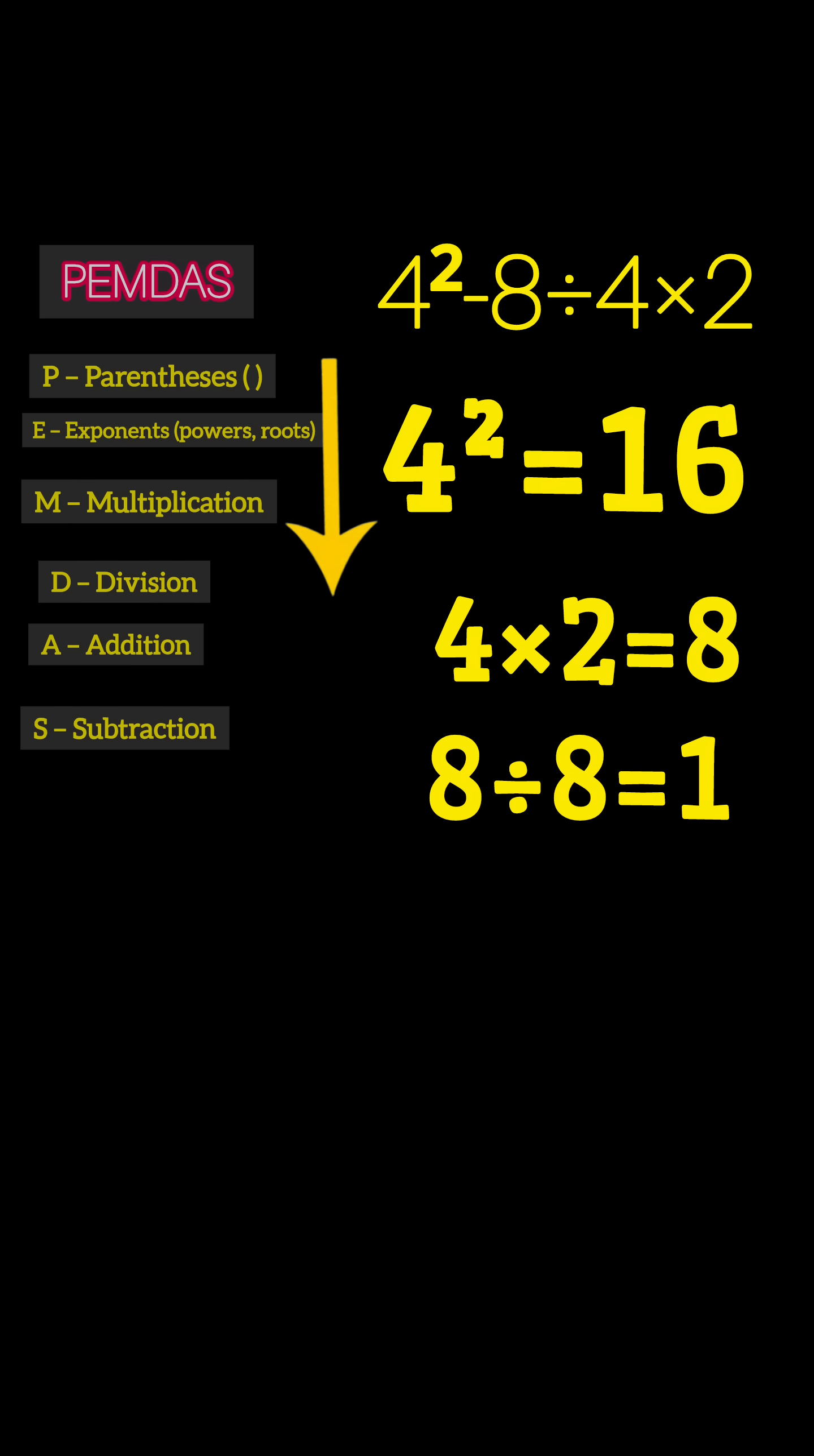Finally, subtraction: 16 - 1 = 15. Sounds neat, right? Well, it's actually wrong. PEMDAS never said multiplication always comes before division.